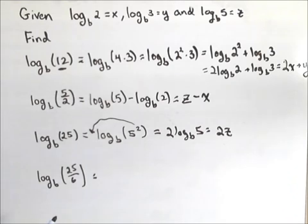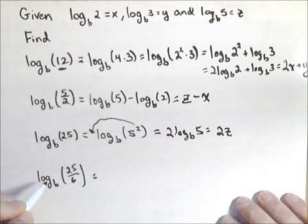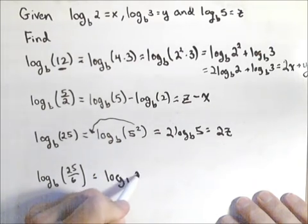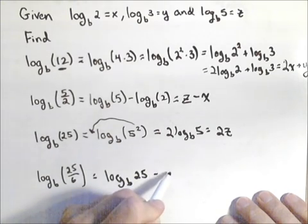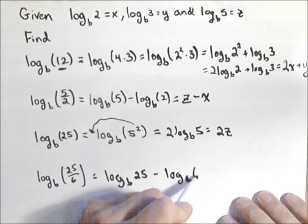Last one. Now again, we don't see the 2, 3, or 5, so let's see what we can do. Well, we know we can write this as log base b of 25 minus log base b of 6.